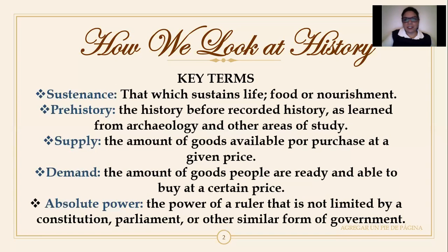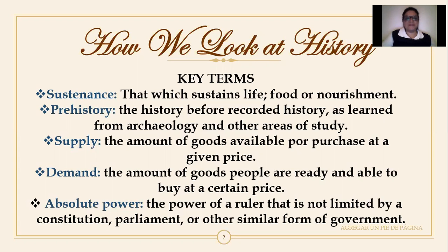The first key term is sustenance: that which sustains life, food or nourishment. Prehistory: the story before recorded history, as learned from archaeology and other areas of study. Supply: the amount of goods available to be purchased at a given price. Demand: the amount of goods people are able to buy at a certain price. And absolute power: the power of a ruler not limited by a constitution, parliament, or other similar form of government, as in a monarchy or dictatorship.